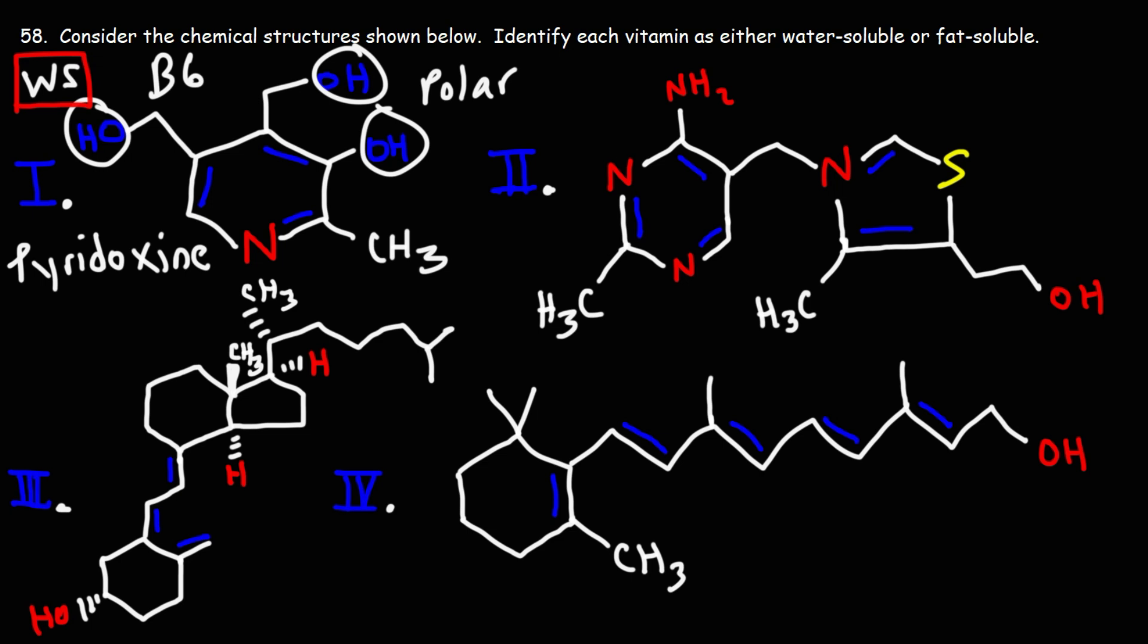Now what about number two? Is it water-soluble or fat-soluble? This is vitamin B1, also known as thiamine. If we look at the functional groups, we can see that we have a hydroxyl group, so that's polar. We have an NH2 group that's also polar. And we have a lot of carbon-nitrogen bonds, which are polar as well. So there's a lot of polar functional groups in this molecule. Therefore, it's going to be water-soluble.